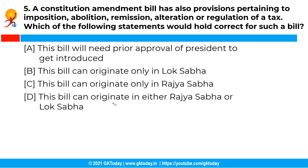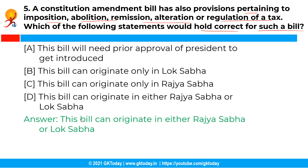The next question is: a constitutional amendment bill has provisions pertaining to imposition, abolition, remission, alteration, or regulation of a tax — which statement holds correct for such a bill? The correct answer is option D: this bill can originate in either Rajya Sabha or Lok Sabha. A constitutional amendment bill is not treated as a money bill even if all its provisions attract Article 110.1, because such amendments are governed by Article 368, which overrides the provisions regarding money bills. This means such a bill can originate in any house of parliament.